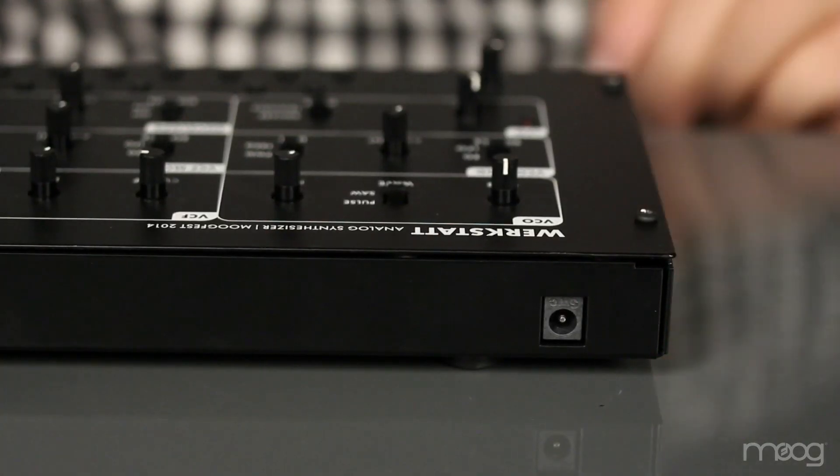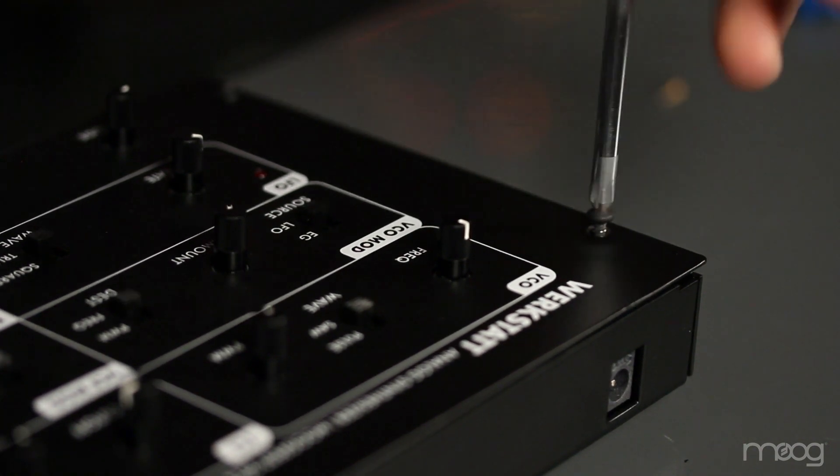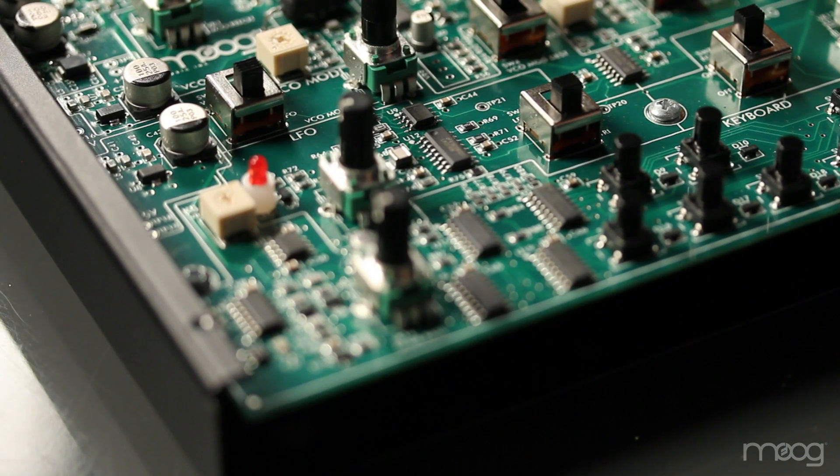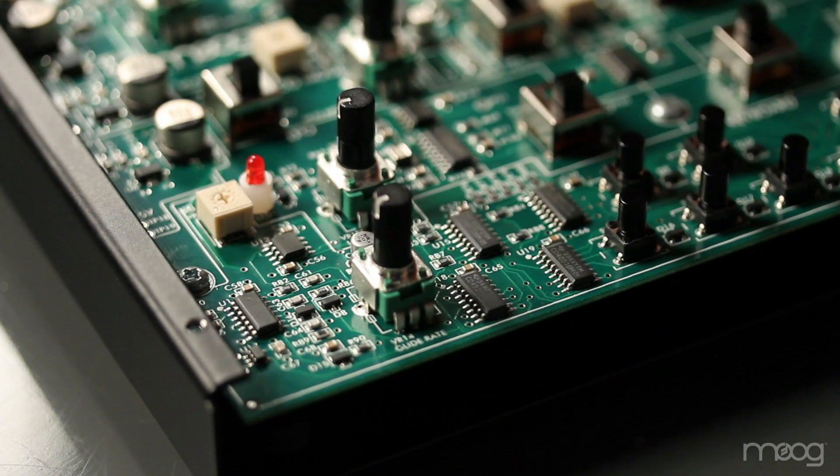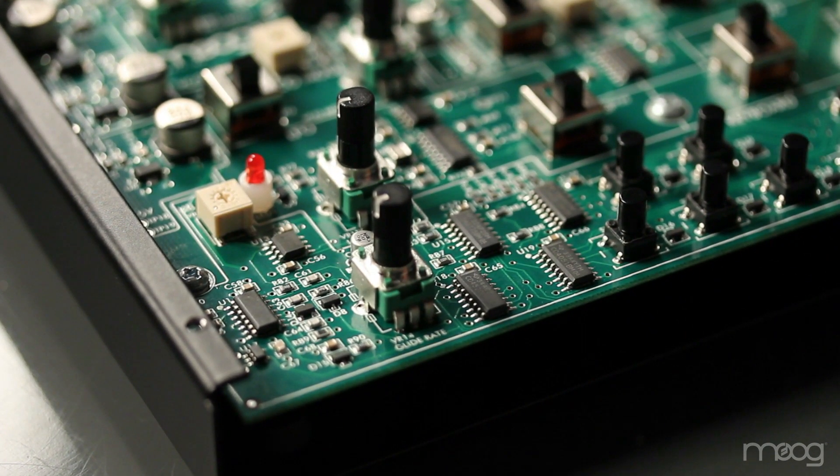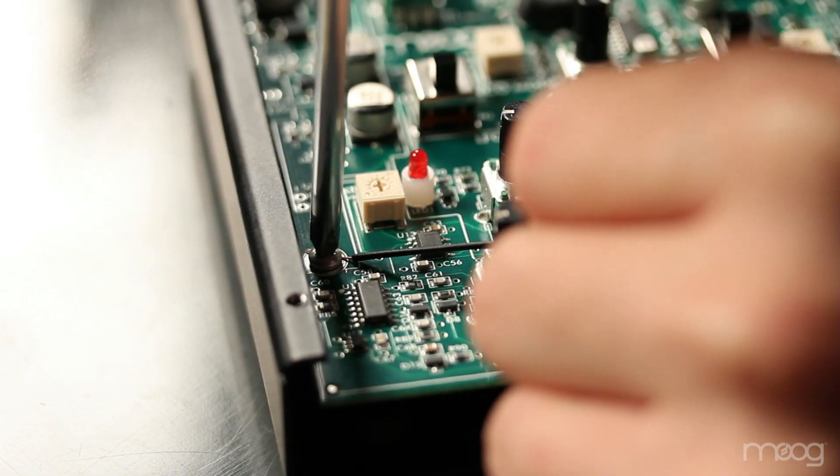Our first step is to unplug the Werkstatt. Then, using the Phillips head screwdriver, we'll remove the top four screws. Inside the PCB, there will be screws holding the board to the chassis. These are the screws that you'll need to get ground off of. Simply strip one end of a jumper cable, wrap it around the ground screw, and tighten.